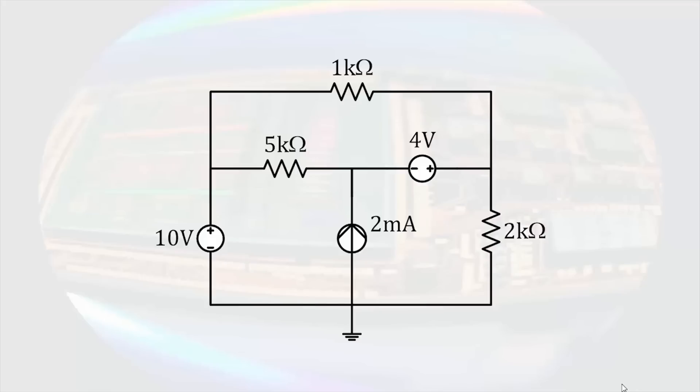Let's start with node voltage analysis. Here is a circuit with a couple of voltage sources and a current source. Node voltage analysis is based upon Kirchhoff's current law coupled with Ohm's law. So the method involves writing Kirchhoff's current law equations in terms of the voltages at the nodes relative to a common point.